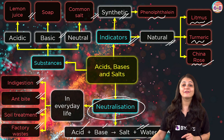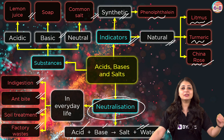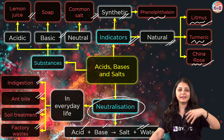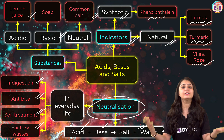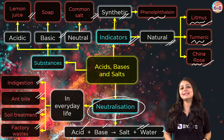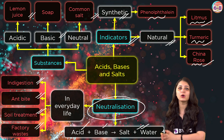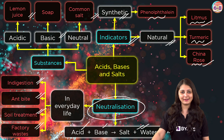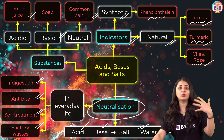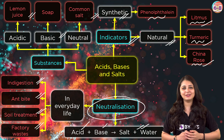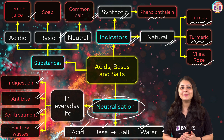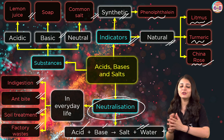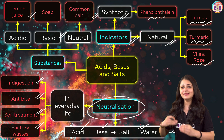Another application is factory waste, which is acidic in nature. We cannot directly dump it into water bodies. So bases are added to it before it flows into a river or stream so that aquatic life is not affected. This knowledge helps us understand and apply chemistry in our real life.